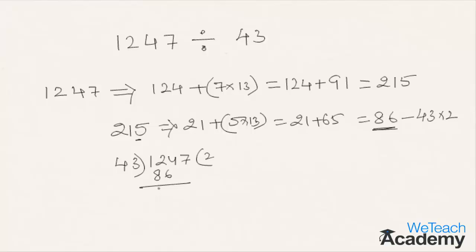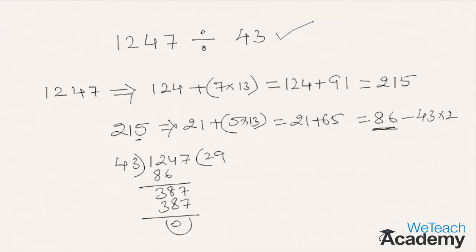Let us verify by dividing 1247 by 43. 43 times 2 is 86; 124 minus 86 is 38. Bringing down the next digit 7 gives us 387, and 43 times 9 is 387. We get remainder 0, so we can say the number is exactly divisible by 43. The concept is absolutely correct.